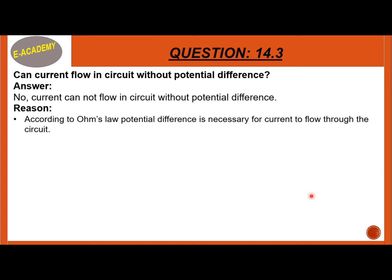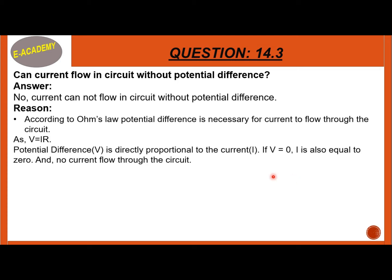According to Ohm's law, potential difference is necessary for current to flow through the circuit. As V is equal to IR, potential difference is directly proportional to the current. If V is zero, then current will also be zero and no current will flow through the circuit.